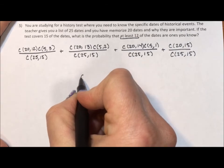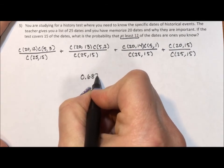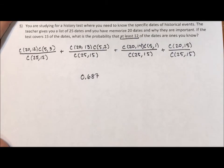You get at the end a 0.687 probability, that's about a 68.7% chance that you know at least 12 of the dates.